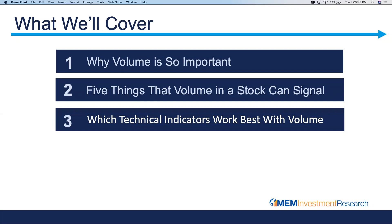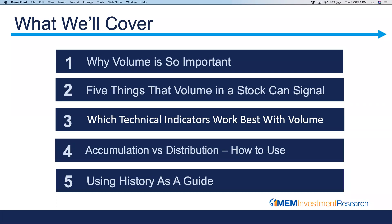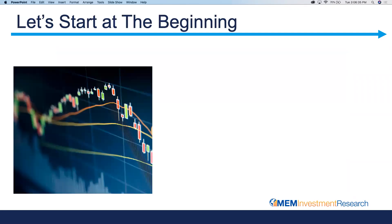We'll also cover which technical indicators work best when you see these high volume characteristics — so whether you're screening on a daily or weekly basis for stocks that are up on heavy volume, you'll want to have these other indicators to tell you whether that high volume is something you should pay attention to or not. We'll cover accumulation versus distribution — a stock in an uptrend being accumulated versus a stock breaking down under distribution — and then using history as a guide with various examples.